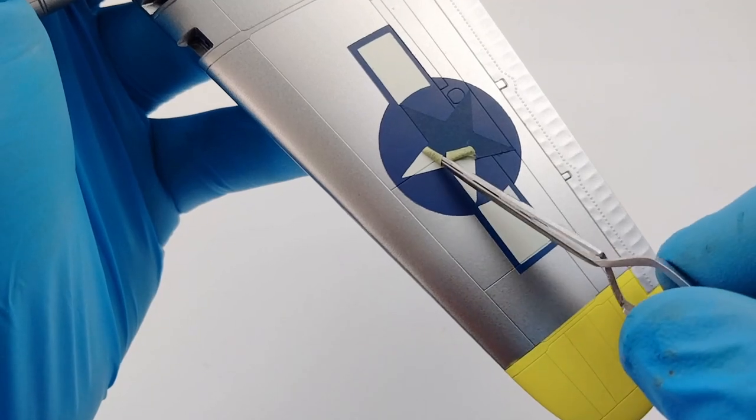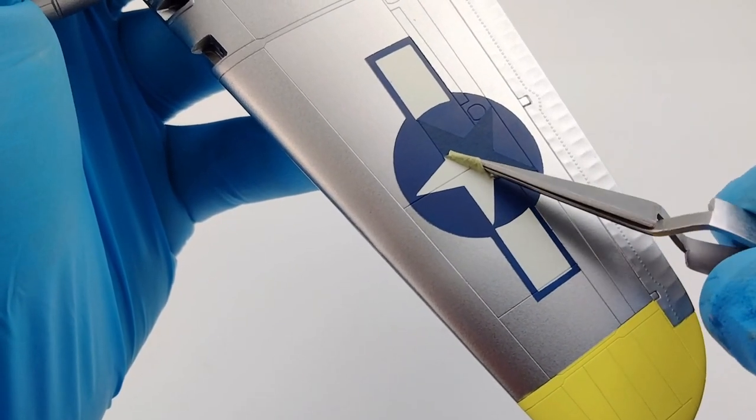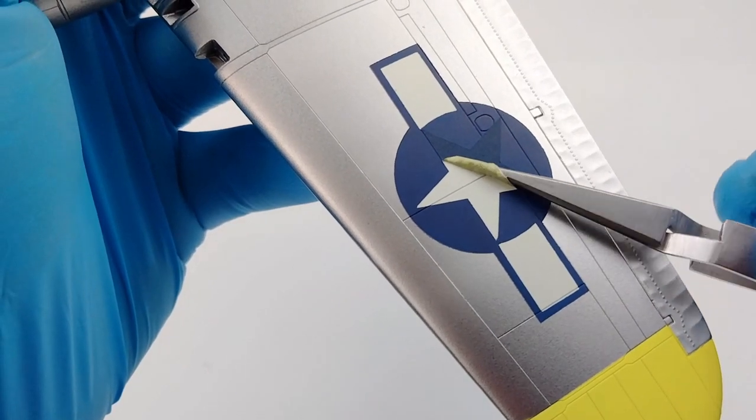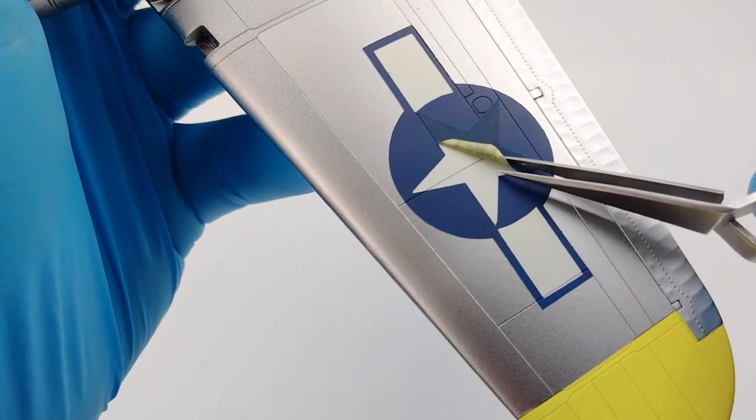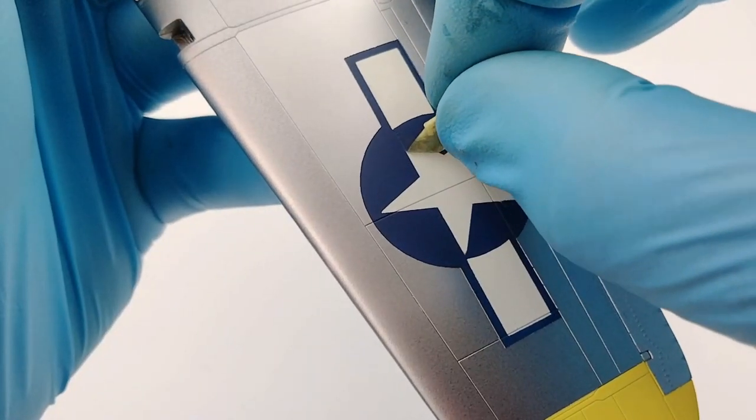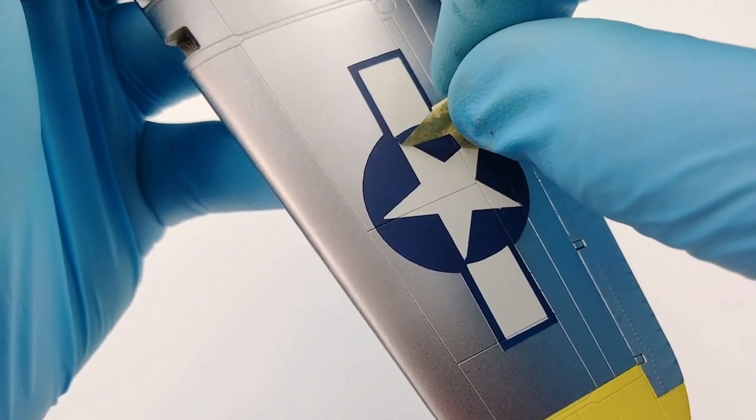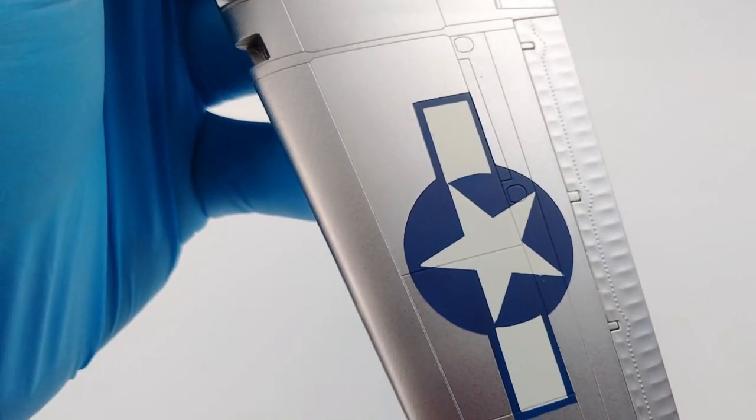With everything dry, it's time to see the fruits of our labor. I demask slowly and gently to make sure I do not damage or pull any of the paint. It's always a treat to see the masks come off and reveal a painted marking just like the real thing. I've skipped all the hassles that come with applying decals and I've retained all the fine detail on the model surface.